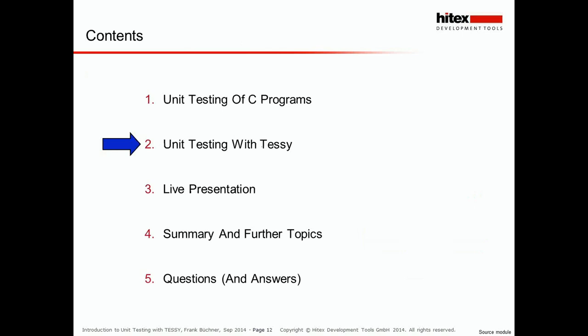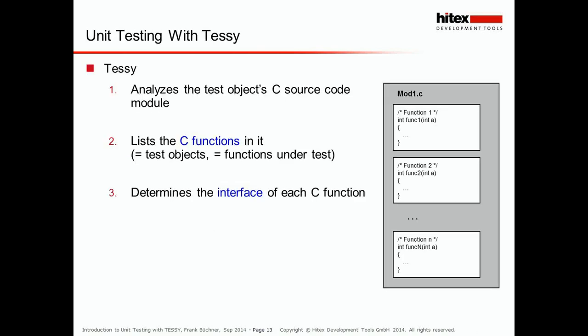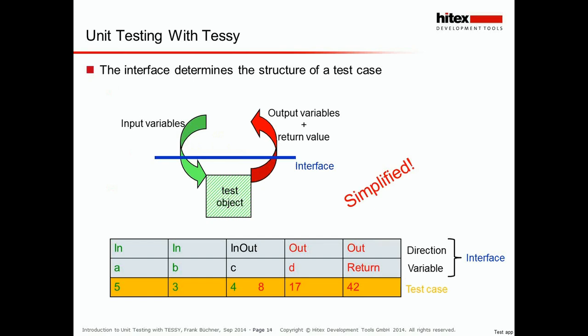Now let's come to the part where I explain how unit testing works with TESI. As we have seen, a unit under test is a function in the sense of C. Unit testing with TESI starts by specifying the C source module in which the unit you want to test is located. TESI analyzes the C source module and finds out which functions are in it — which means which test objects are in this module. More importantly, TESI also determines the interface of each test object in this module.